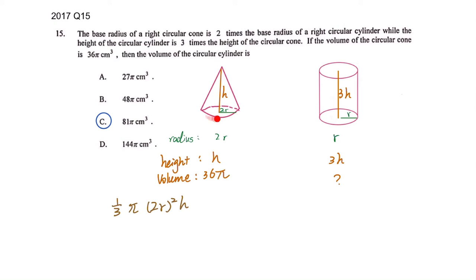Because volume is base area times height and then this one, base is a circle so the area of the circle is πr². Pi r, because the radius here is 2r, remember, bracket πr² times the height which will equal to 36π.